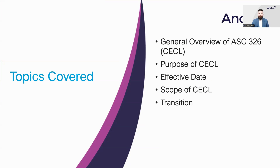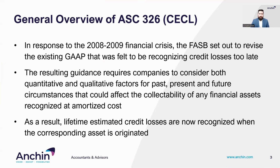In this first video, we'll be giving you a general overview of the new standards. After the 2008-2009 financial crisis, the FASB set out to revise existing GAAP in order to recognize potential credit losses on a more timely basis. Although this was started with the intention of gearing the guidance towards financial institutions with specific financial assets, the guidance was ultimately set up to cover all industries. The resulting guidance requires companies to consider both quantitative and qualitative factors for past, present, and future circumstances that could affect the collectability of any financial assets recognized at amortized cost. This results in a new standard that recognizes credit losses when the corresponding asset is originated, which differs significantly from legacy GAAP.